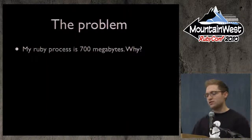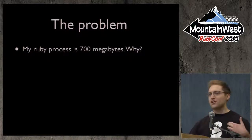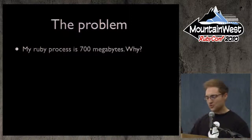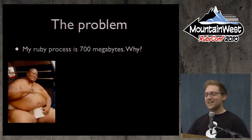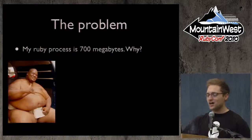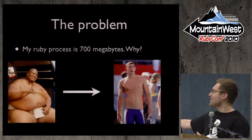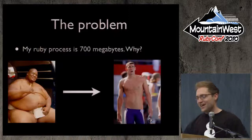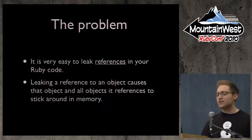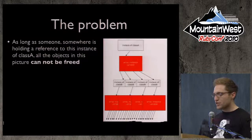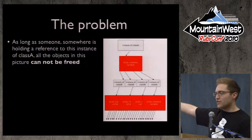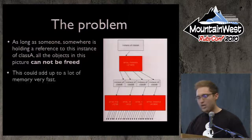What's the problem? Basically, my Ruby process is 700 megabytes and I want to know why. The problem is it's really easy to leak references in your Ruby code. If you leak a reference to an object, that causes that object and any objects it references to stick around in memory forever. As long as somebody is holding a reference to the top object in the tree, this entire tree of objects cannot be freed — and that can add up to a lot of memory really fast.